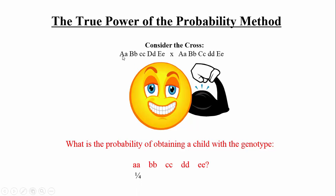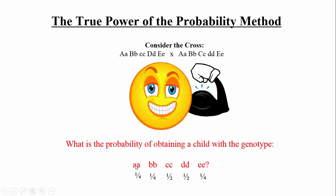We break the problem apart gene by gene. Crossing Aa × Aa gives one-quarter chance of aa offspring. Crossing Bb × Bb gives one-quarter chance of bb. For gene C, crossing cc × Cc gives one-half chance of cc offspring — different from the others. We continue this for all five genes, obtaining individual probabilities for each.